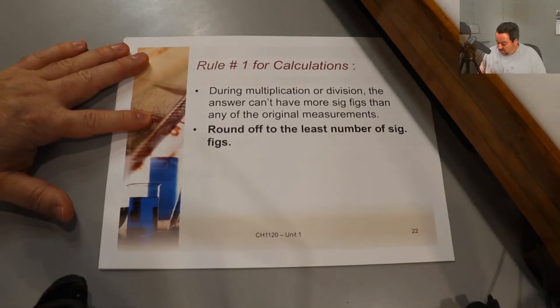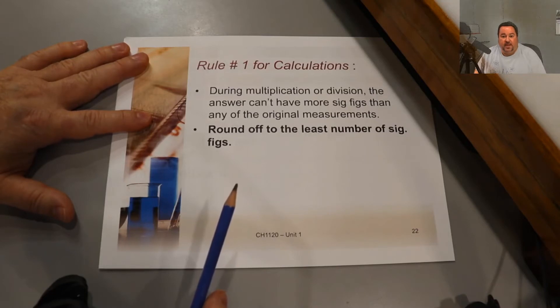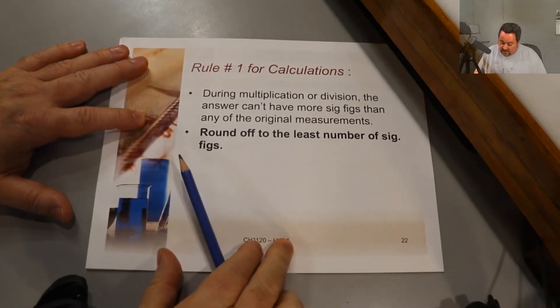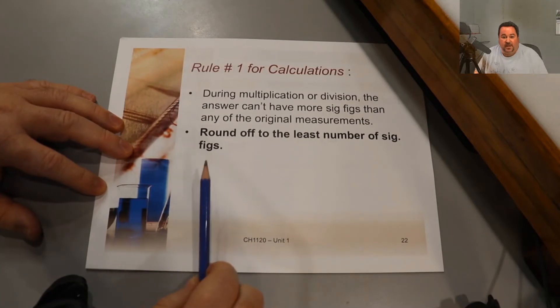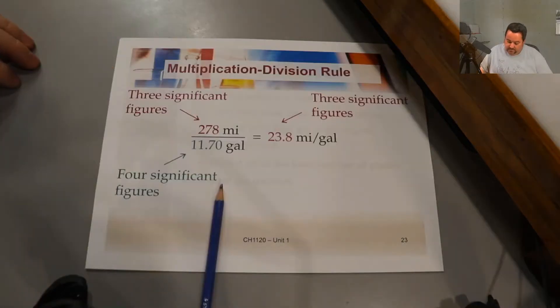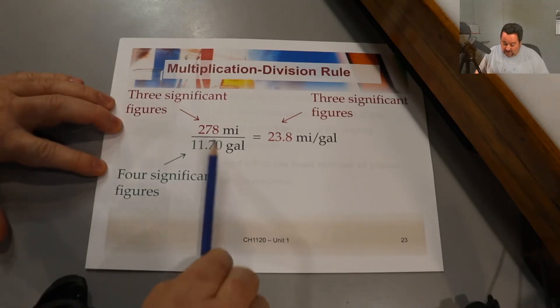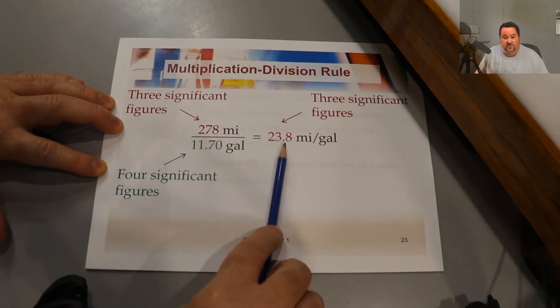When we do calculations, there are three rules that we have to pay attention to. There's a rule for multiplication and division, and that rule says that when doing multiplication and division, we round off to the least number of significant figures in the calculation. Here's an example of the multiplication division rule. The numerator has three significant figures. The denominator has four, so our answer is rounded to three significant figures.